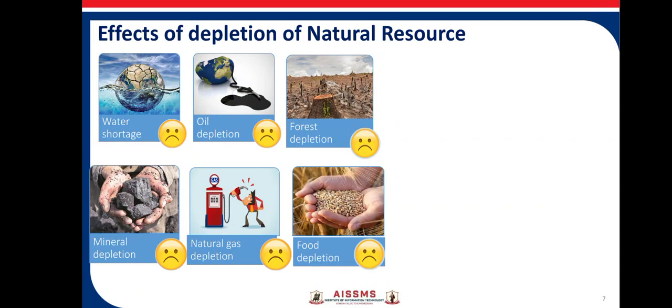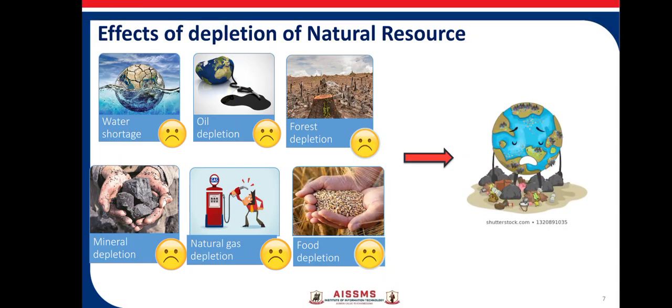What are the effects of deflection of natural resources? There are several bad effects: it may cause water shortage, deflection of oil due to overuse, forest deflection, mineral deflection, natural deflection, and food deflection.